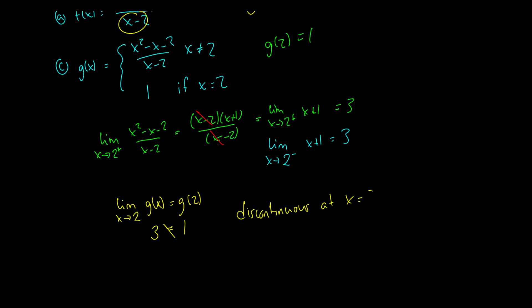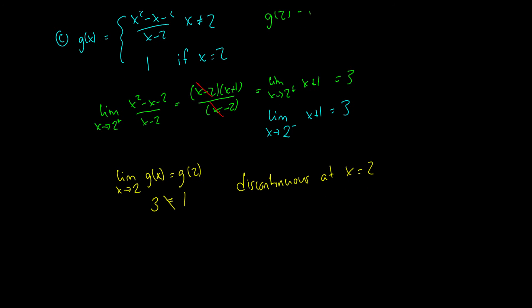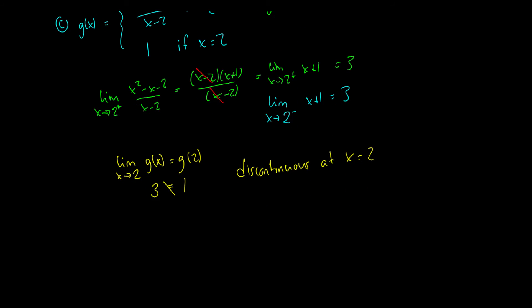This is what is called a removable discontinuity, and it is removable because we can define g of 2 to equal 3. Because the limit exists, we can just define g of 2 to equal 3, and then the limit will match the point at g of 2, making the function completely continuous — it would have a graph that's continuous.